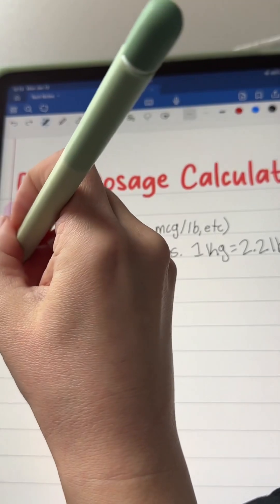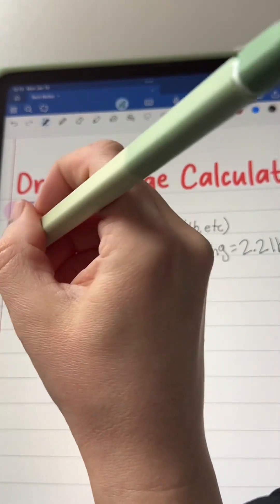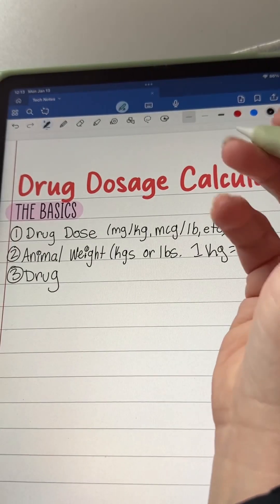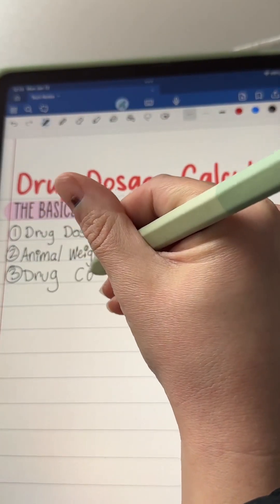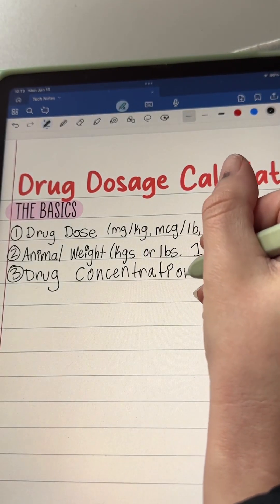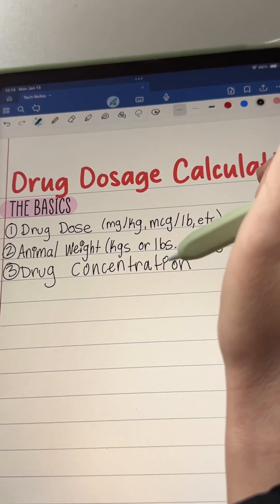And number three, you will need the concentration of the drug you are using. This may be mg per ml, units per ml, micrograms per ml. Just again, you need to pay attention to your units.